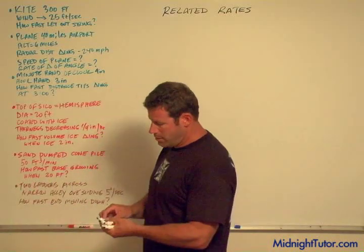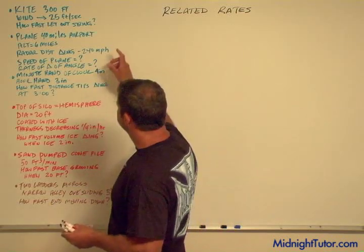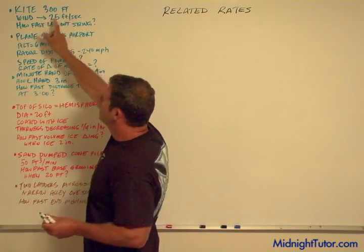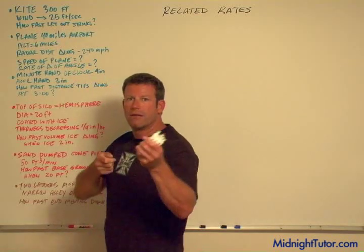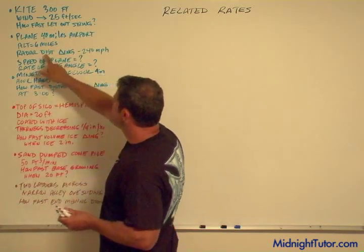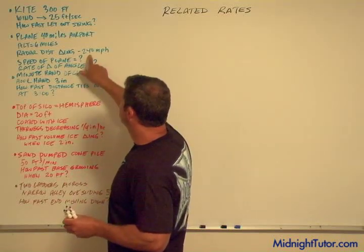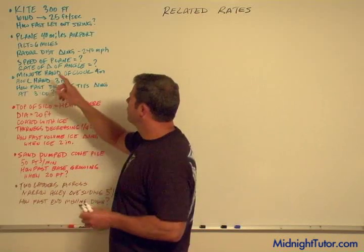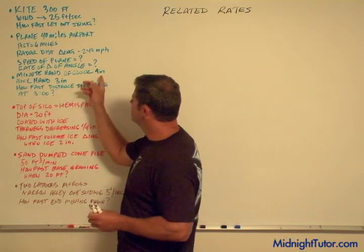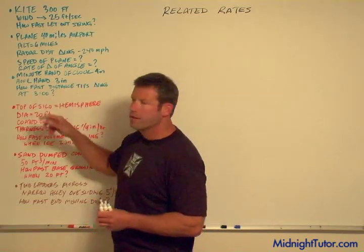Let me go through some of my favorites. We have a kite at 300 feet — wind is blowing the kite horizontal to the ground, and the question is how fast do we have to let out the string? A plane is traveling 40 miles from the airport at six miles altitude; the radar shows the diagonal distance changing at 240 miles per hour — what's the speed of the plane and the rate of change of the angle? And there's a clock with a minute hand four inches long and an hour hand three inches — how fast is the distance between the tips changing at three o'clock?